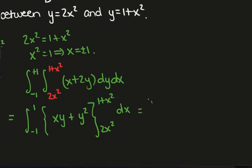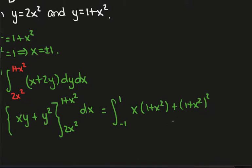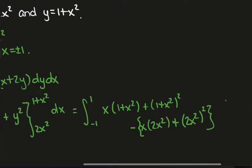So now we just put these bounds in. I'll get minus 1 to 1. I'll have x times 1 plus x squared plus 1 plus x squared squared, and then minus I'll have x times 2x squared, or what we can do instead is put a minus out the front of these and then have 1 plus x squared first, then 2x squared squared. And this is all dx.